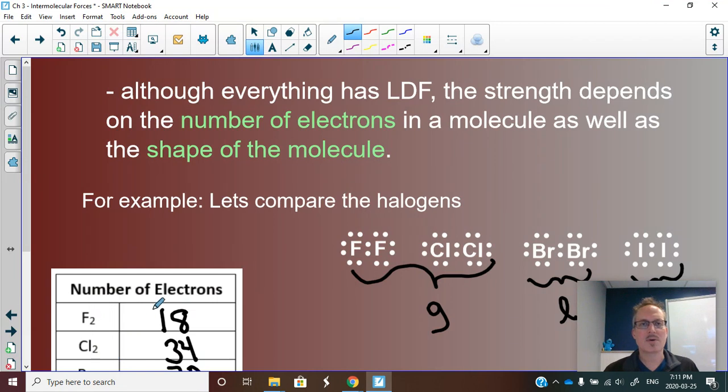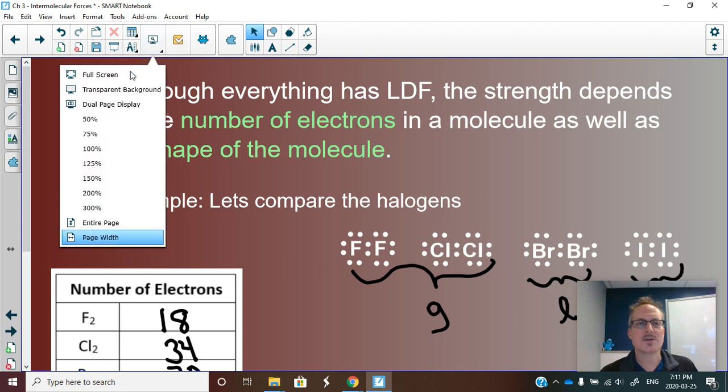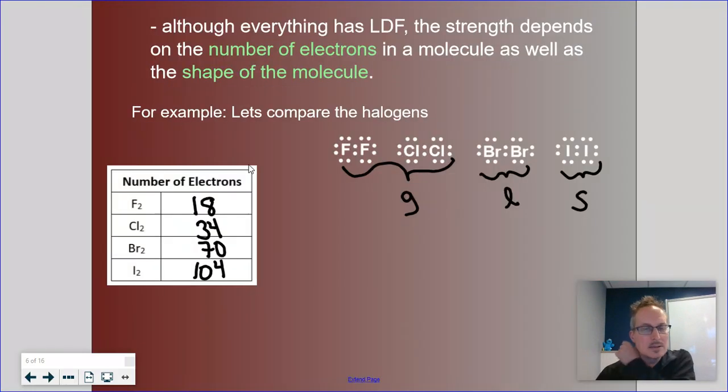Now, what I want us to figure out here is what does that mean? What happens is the electrons get larger. Everything has London dispersion forces, but the trick to this is they're not always equal. So what we're going to say is the greater the number of electrons, the greater the London dispersion forces. So London dispersion forces increase as the number of electrons increase.